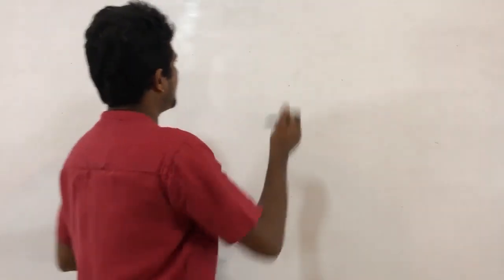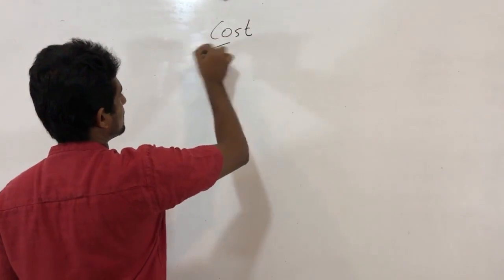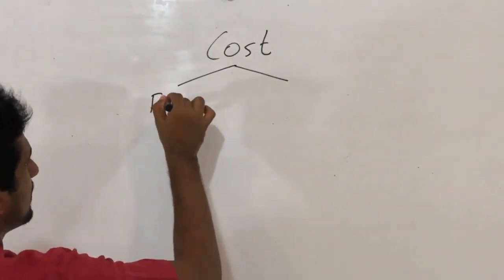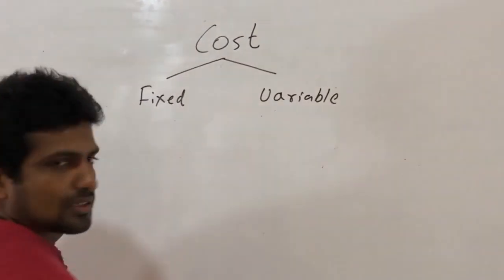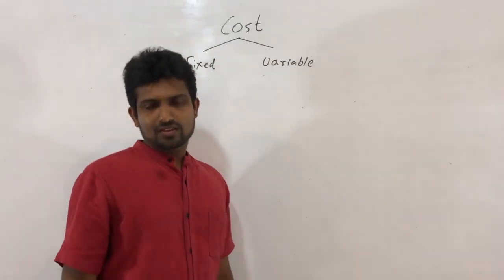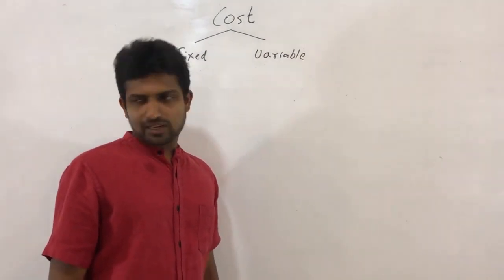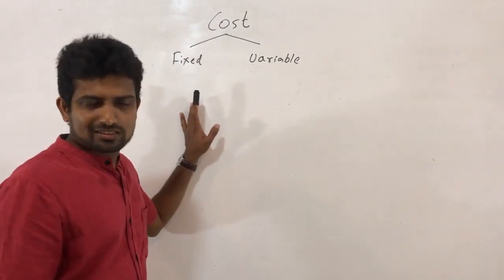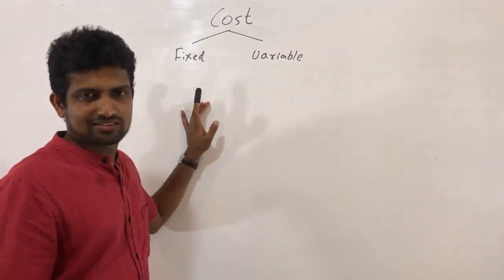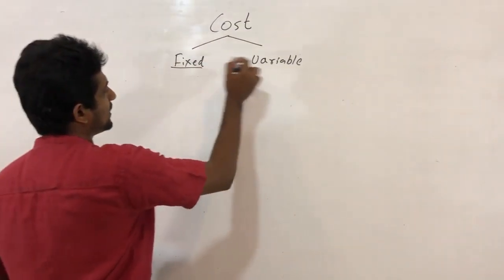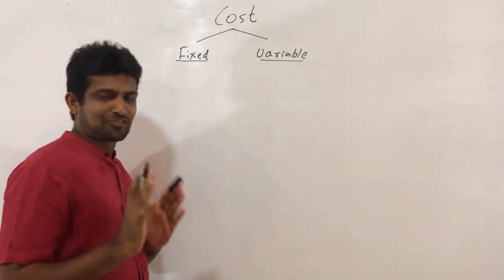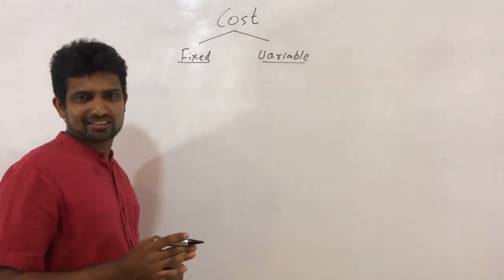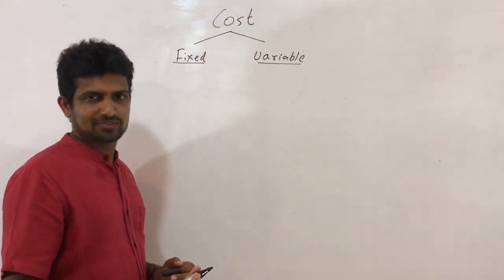In CVP analysis, we categorize costs into two types: fixed or variable. We are going to discuss the advanced part — CVP analysis. I am going to show you a nice formula, so understand carefully. If you feel you did not get something, you have to reverse the video and watch again.